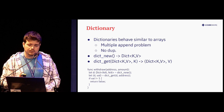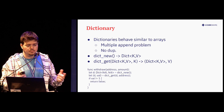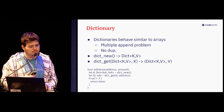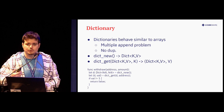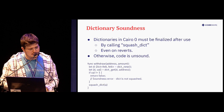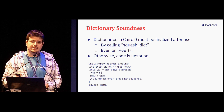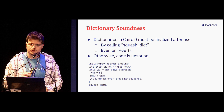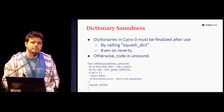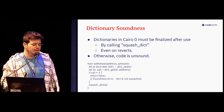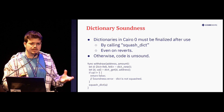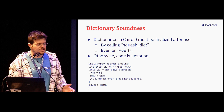We implement dup only for things that are safe to duplicate — usually just things that don't contain array or dict. A dictionary also has a similar problem with multiple writes, just like arrays, so we do the same thing: we have dict_new and dict_get that increments the pointer. Dicts have another issue of soundness: in Cairo 0 you must remember to call squash_dict on the dictionary — it's sort of finalizing the dict. You must do it, otherwise your program is not sound.